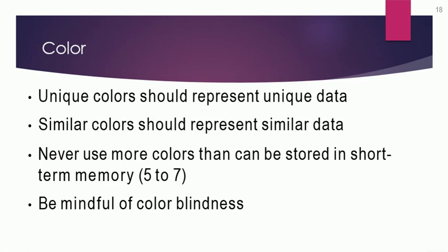We have to limit the use of colors to five to seven elements, as our short-term memory has a limited capacity of about five to seven items. We should use a maximum of four to five colors in our visualization. We also have to choose colors that are accessible for colorblind people. If we choose colors well, the visualization will be good; if we choose poorly, it will be bad.